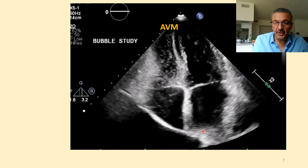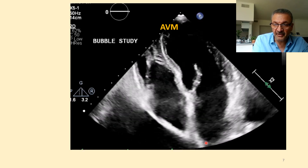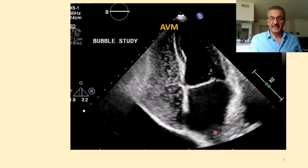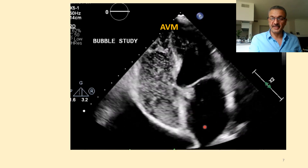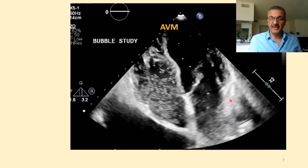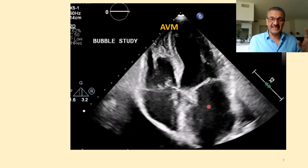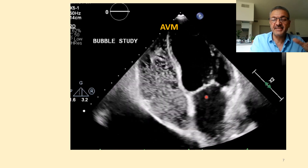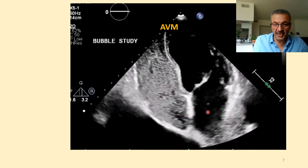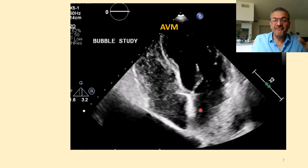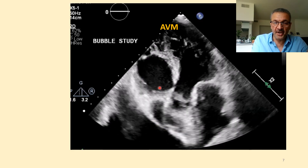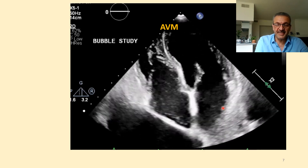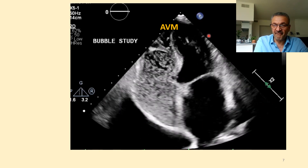How can we diagnose AV malformation with bubble test? There are two criteria. First, macrobubbles can be seen entering the left atrium through the pulmonary vein — starting from the pulmonary vein and going up, not from the interatrial septum. But it is very tricky to detect the origin. The most important criterion is timing: in AV malformation, macrobubbles show up after five beats of bubble appearance in the right side before they show up in the left side. If either of these criteria is present, we can say the patient has AV malformation.